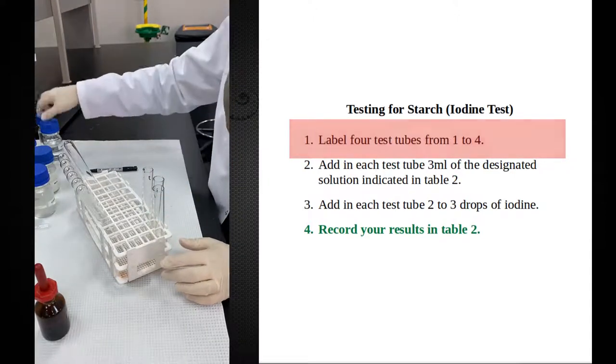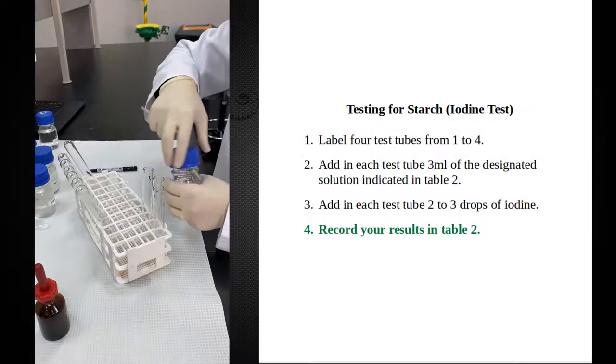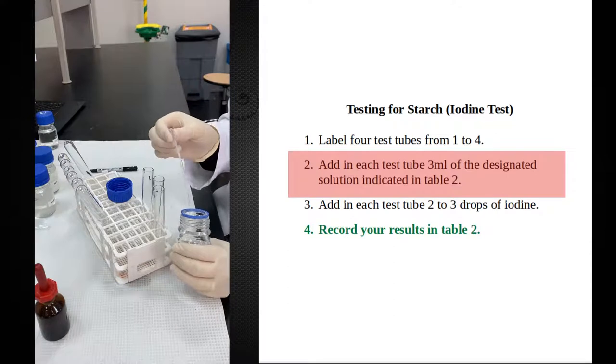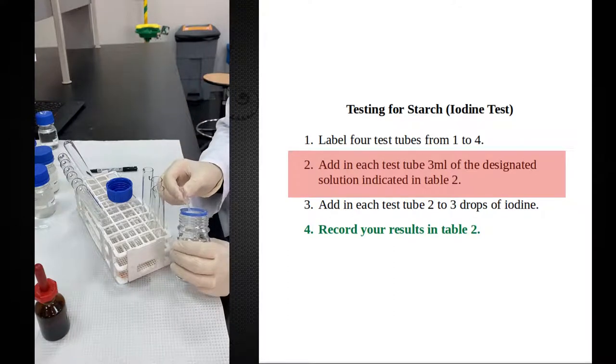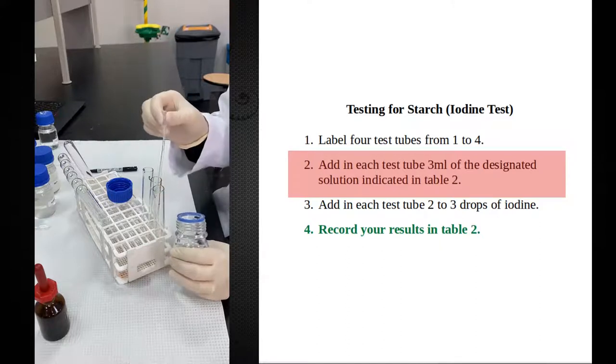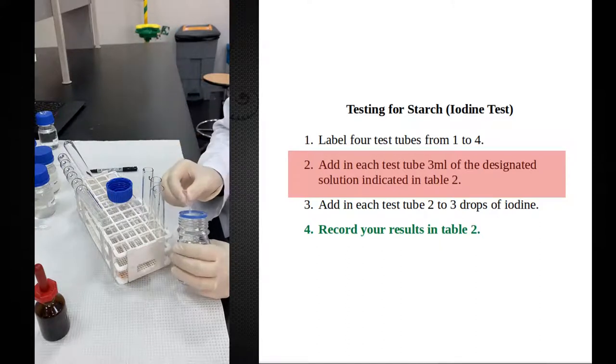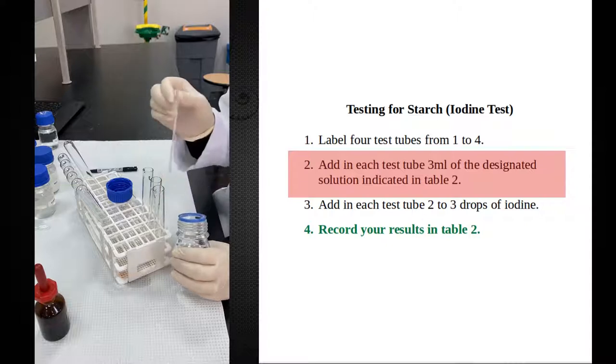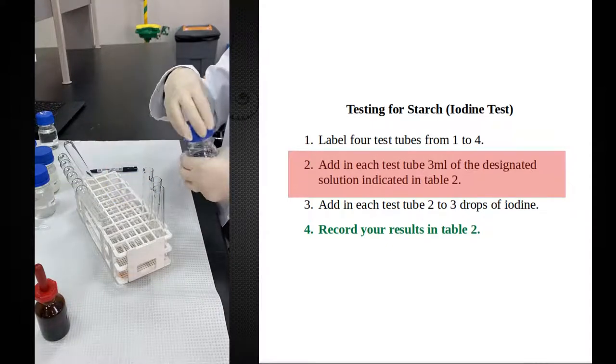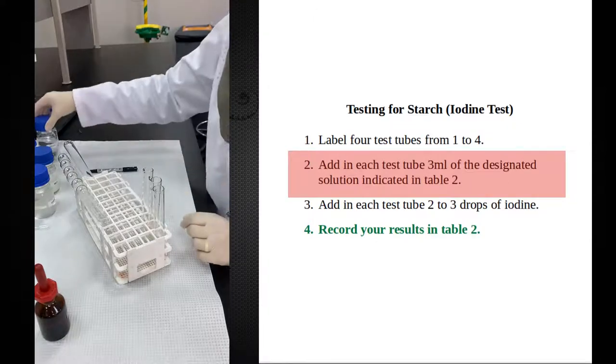In the first test tube, as I'm doing in all the tests, I will add negative control. My negative control is distilled water. I will add 3 ml this time to make the result more visible. Distilled water has no organic compounds, and therefore this is my negative control. I know it is going to give me negative results. I'm using it to compare my results to it.